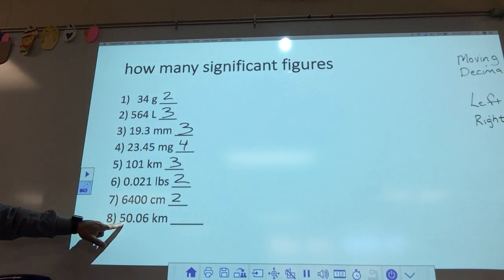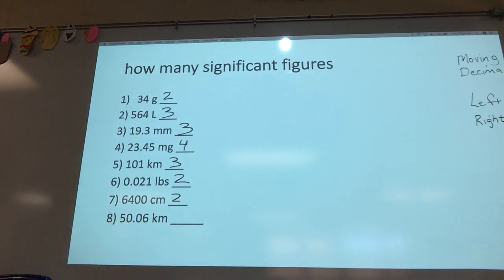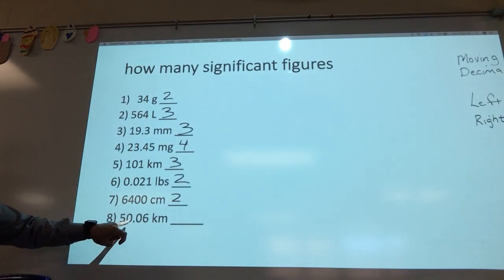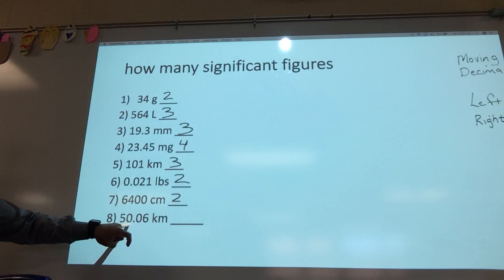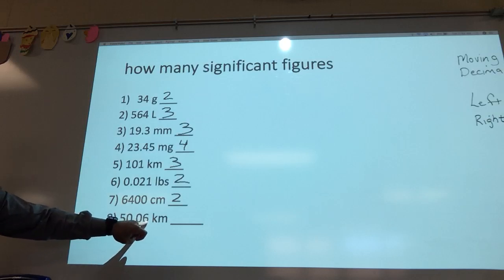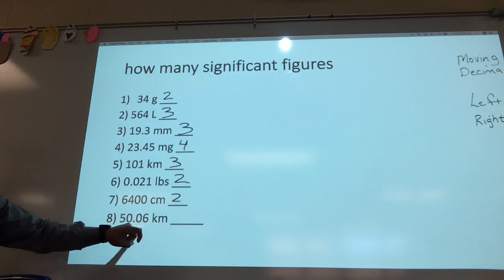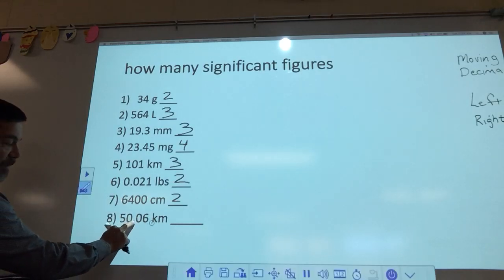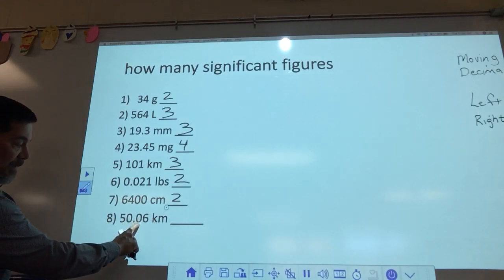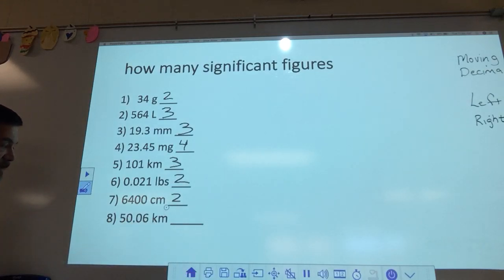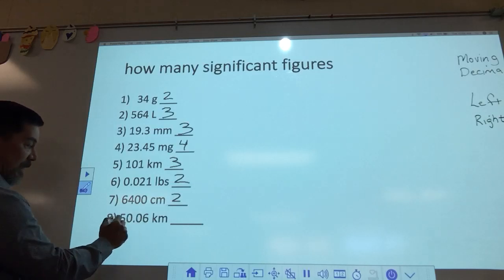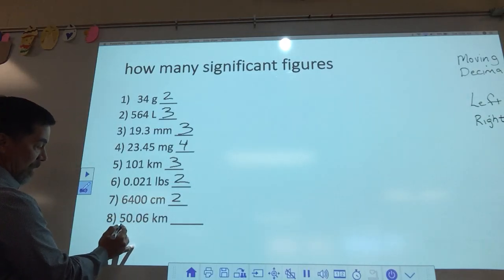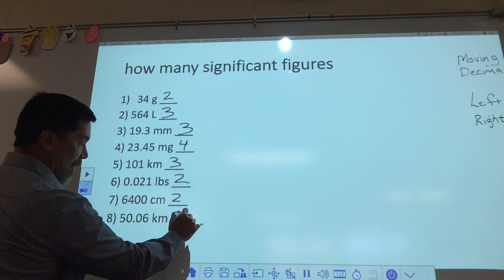How about this one? Let's go piece by piece. These zeros are between a non-zero number, so they count. This zero counts because there's a decimal, and this zero counts because it's to the right of a decimal. So how many significant figures are in 50.06? There are four.